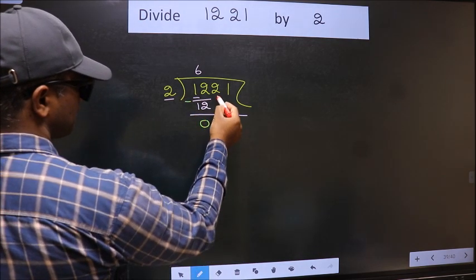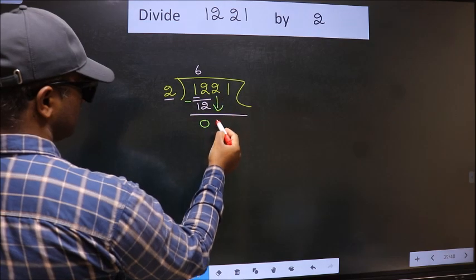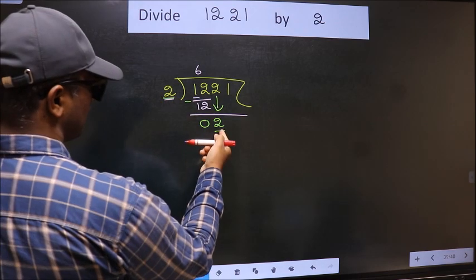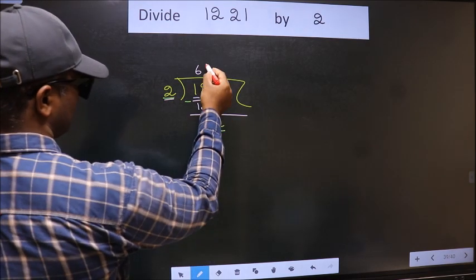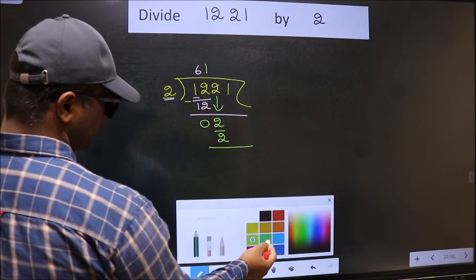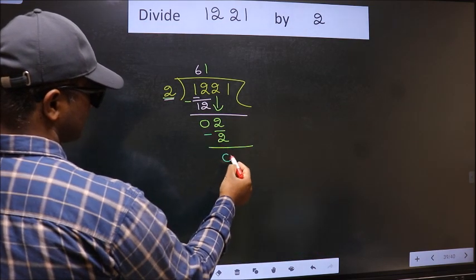After this, bring down the beside number. So, 2 down. Now, here we have 2. Here also 2. When do we get 2 in 2 table? 2 times 1 is 2. Now, we should subtract. We get 0.